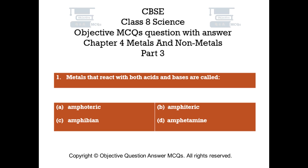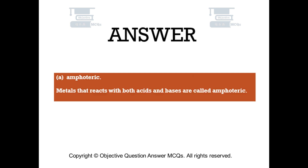Question number 1. Metals that react with both acids and bases are called. Option A: amphoteric. Option B: amphoteric. Option C: amphibian. Option D: amphetamine. The right answer is option A. Amphoteric. Metals that react with both acids and bases are called amphoteric.